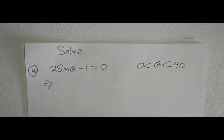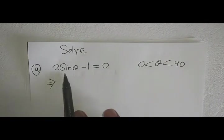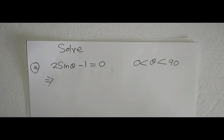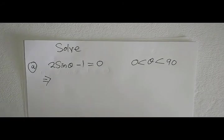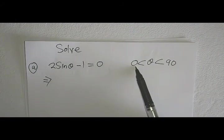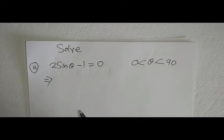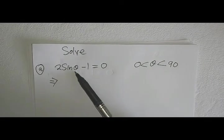We would now like to solve 2sinθ - 1 = 0 where we are solving for θ between 0 and 90 degrees. As usual, this means we must aim to have sin on the left-hand side.